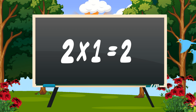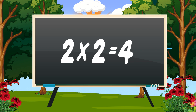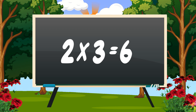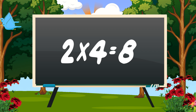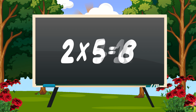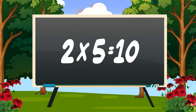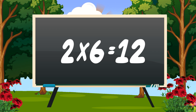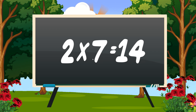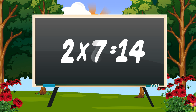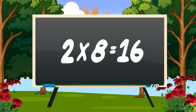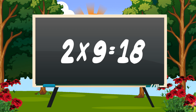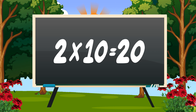Two ones are two, two twos are four, two threes are six, two fours are eight, two fives are ten, two sixes are twelve, two sevens are fourteen, two eights are sixteen, two nines are eighteen, two tens are twenty.